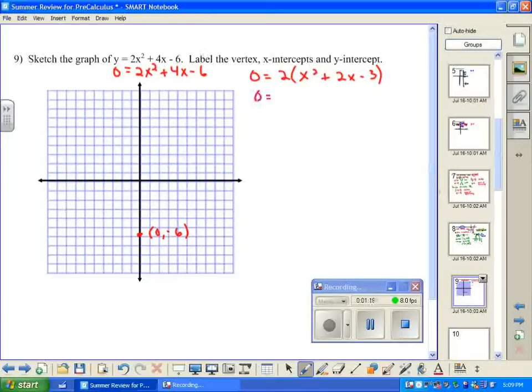We can factor this quadratic here. Factors of 3 are 3 and 1, and I want a plus 3 and a minus 1, so that our middle term is 2x.